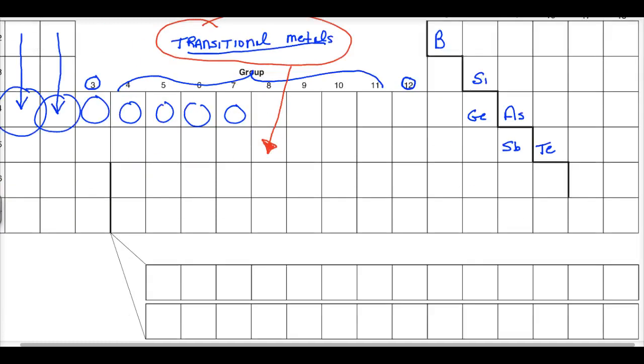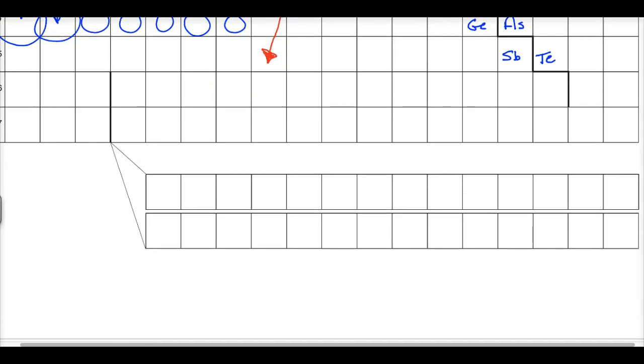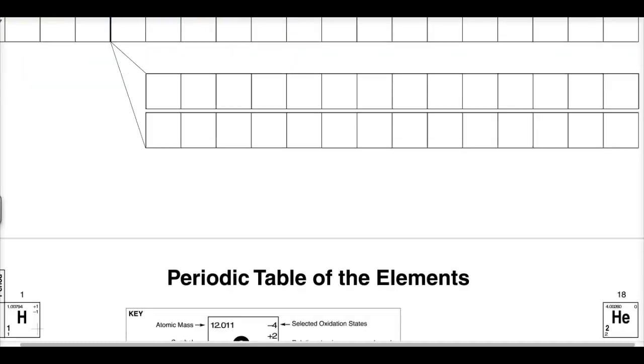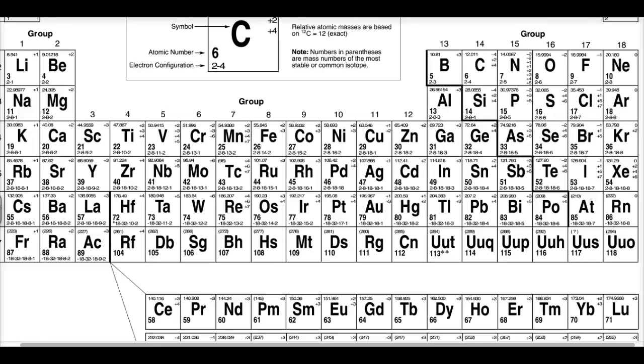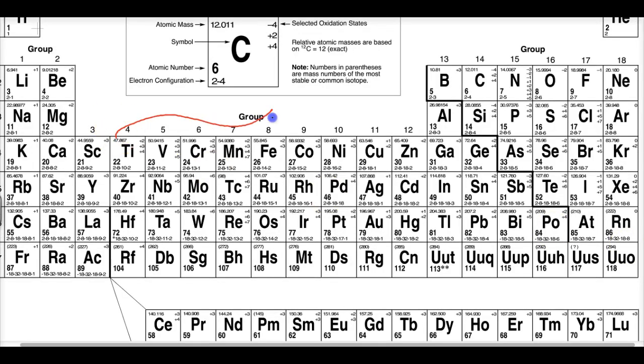If we go to the periodic table—the one we use in class—we'll see that transitional metals have multiple oxidation states and multiple charges. The reasons are beyond this course's scope—they involve orbitals and electrons between the s and d orbitals—but what you need to know is they have multiple oxidation states.